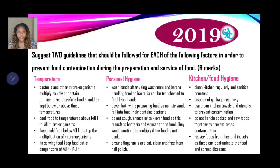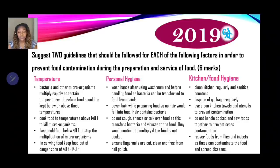Cook food to temperatures above 140 degrees Fahrenheit to kill microorganisms. Keep cold food below 40 degrees Fahrenheit to stop the multiplication of microorganisms. When serving food, keep food out of the temperature danger zone, which ranges between 40 degrees Fahrenheit and 140 degrees Fahrenheit — the ideal temperature range for microorganisms to grow and reproduce.